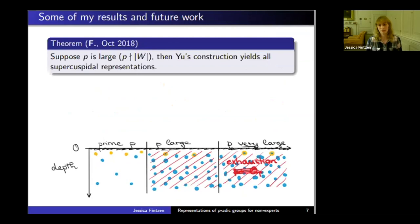The statement is that if p is large, we get everything from Yu's construction. By p large, the precise statement is that p doesn't divide the order of the Weyl group, which means for GL_n, p is larger than n. This is a result that last time I was at the IAS, I stated as an expected result.